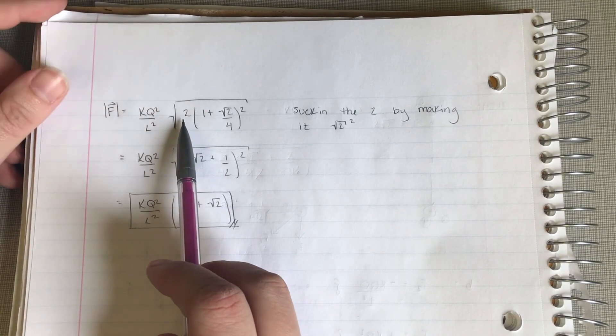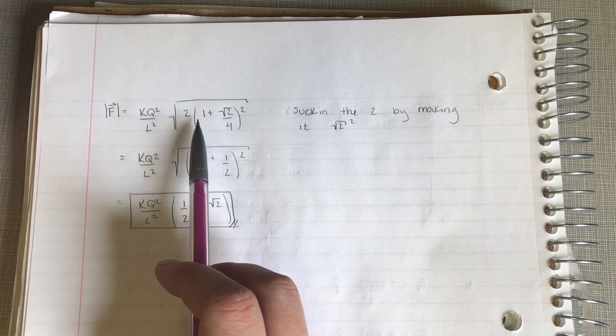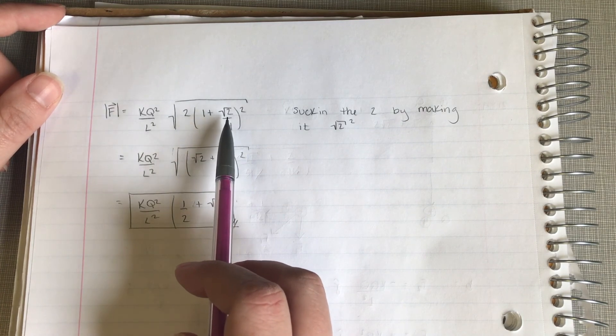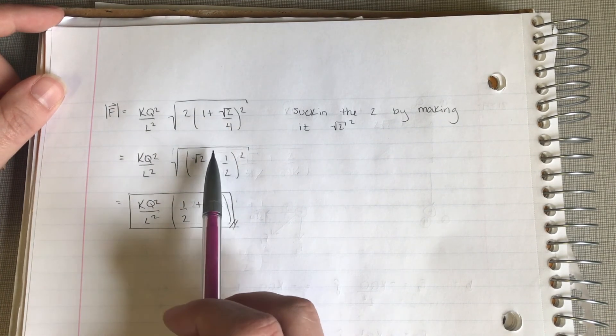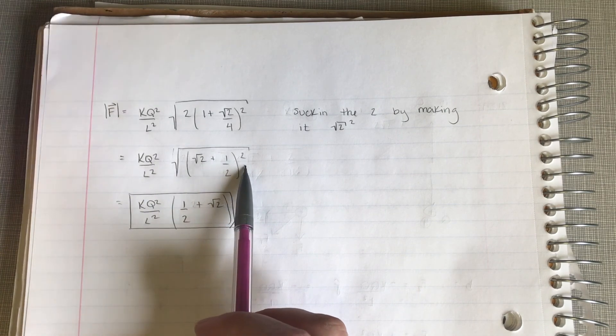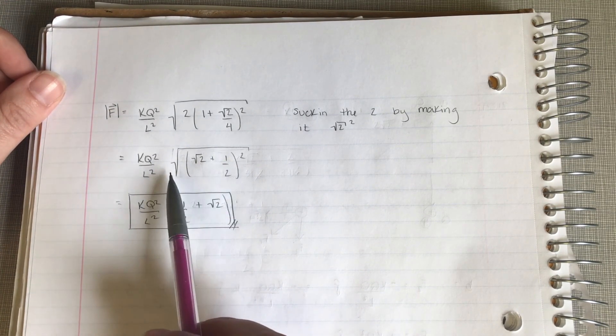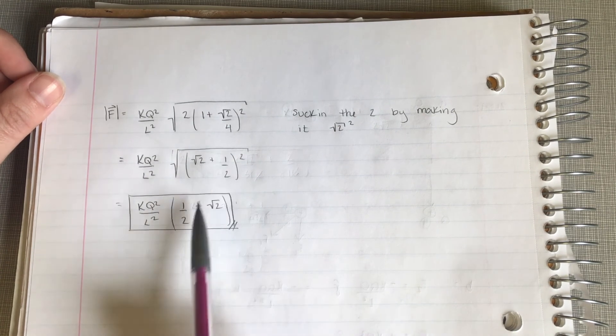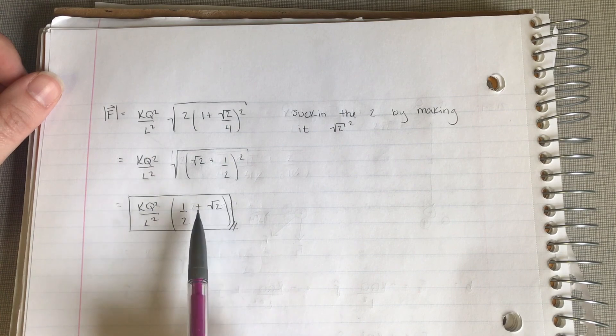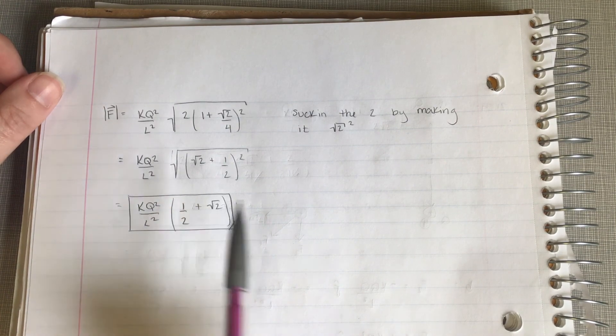We can suck in our 2 by making it a root 2 squared. So then we have a root 2 plus a root 2 root 2 over 4 squared, which is just going to turn into root 2 plus a half squared. And so now that it's all nice and compact, our square root and our square cancel each other, so our final force is k q squared over L squared times 1 half plus square root of 2. And that's it.